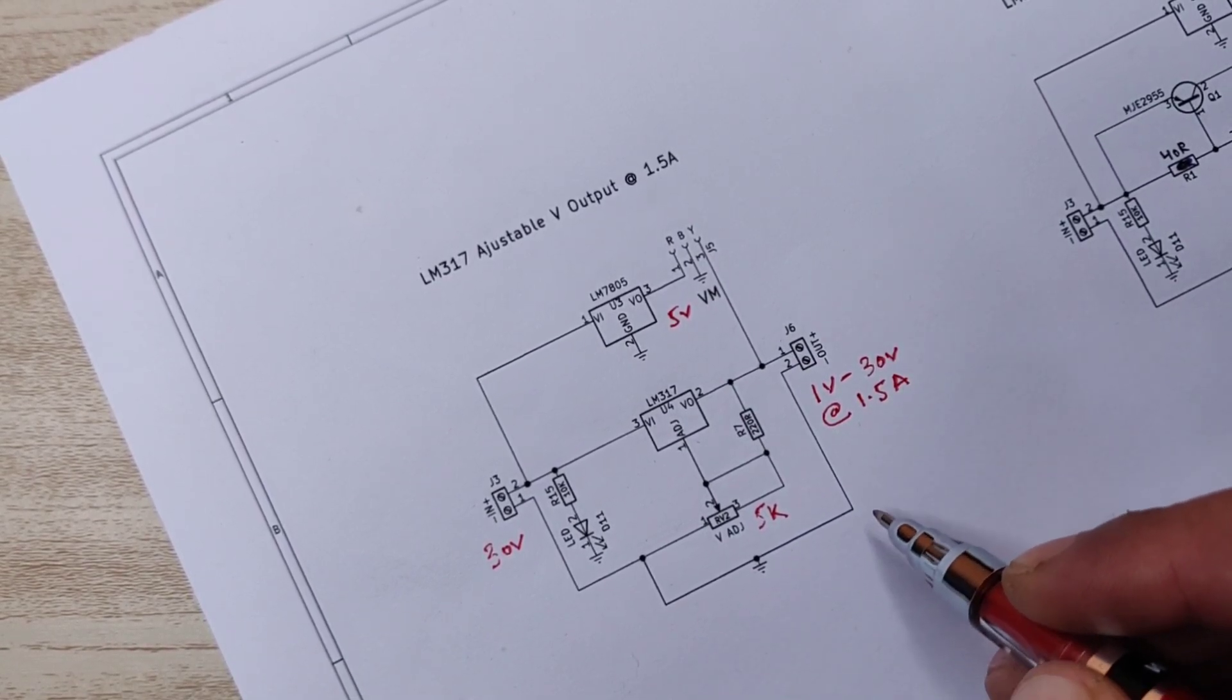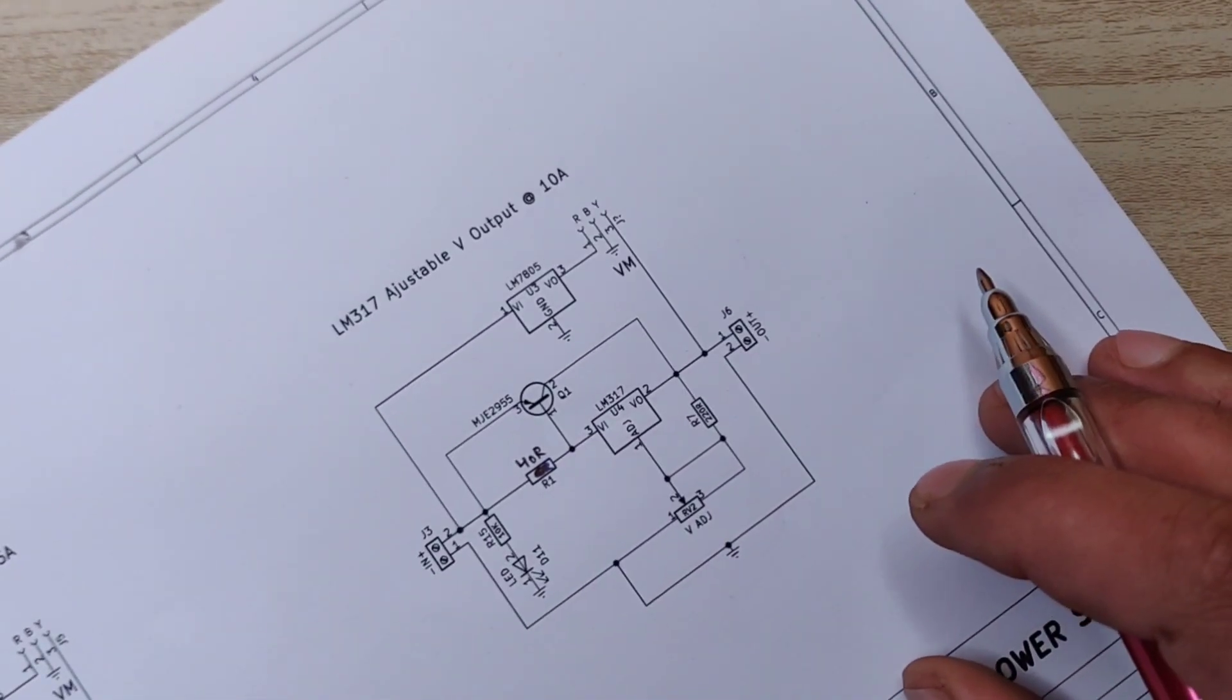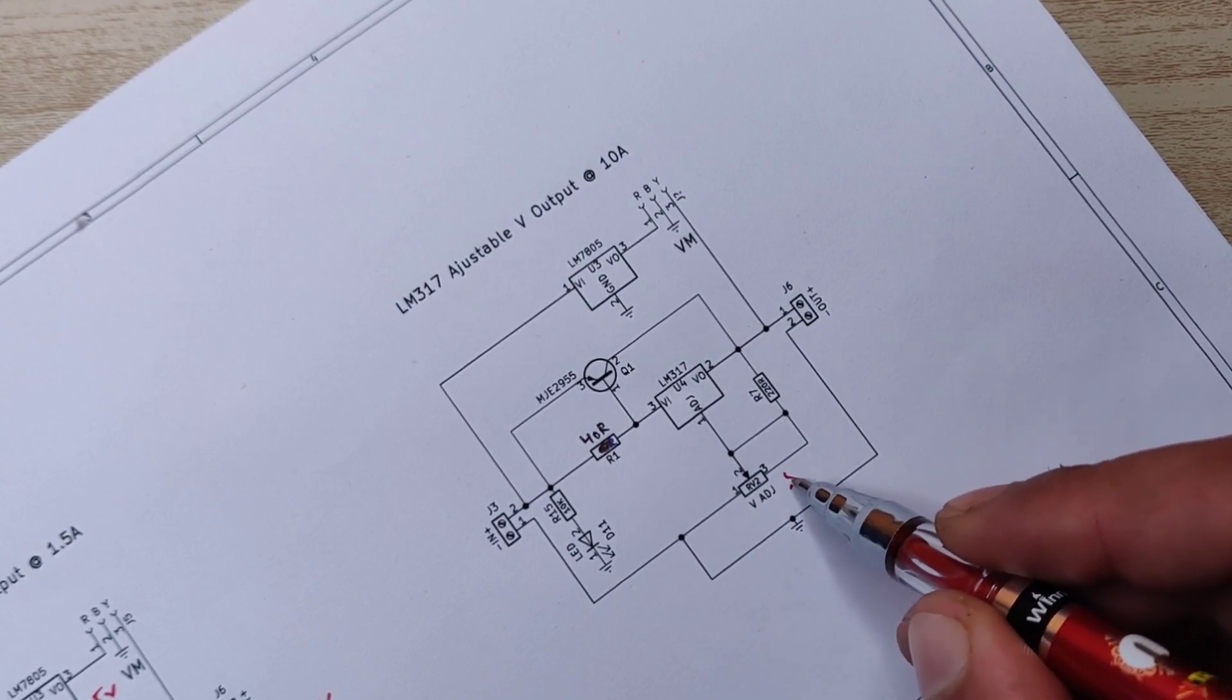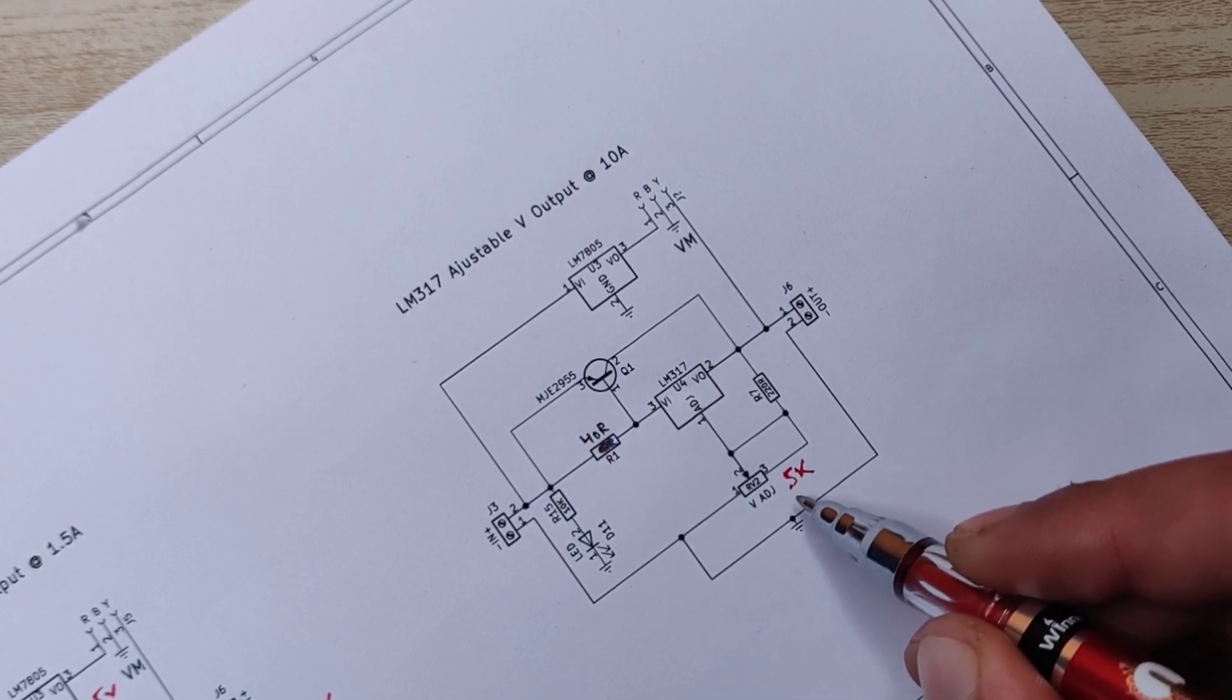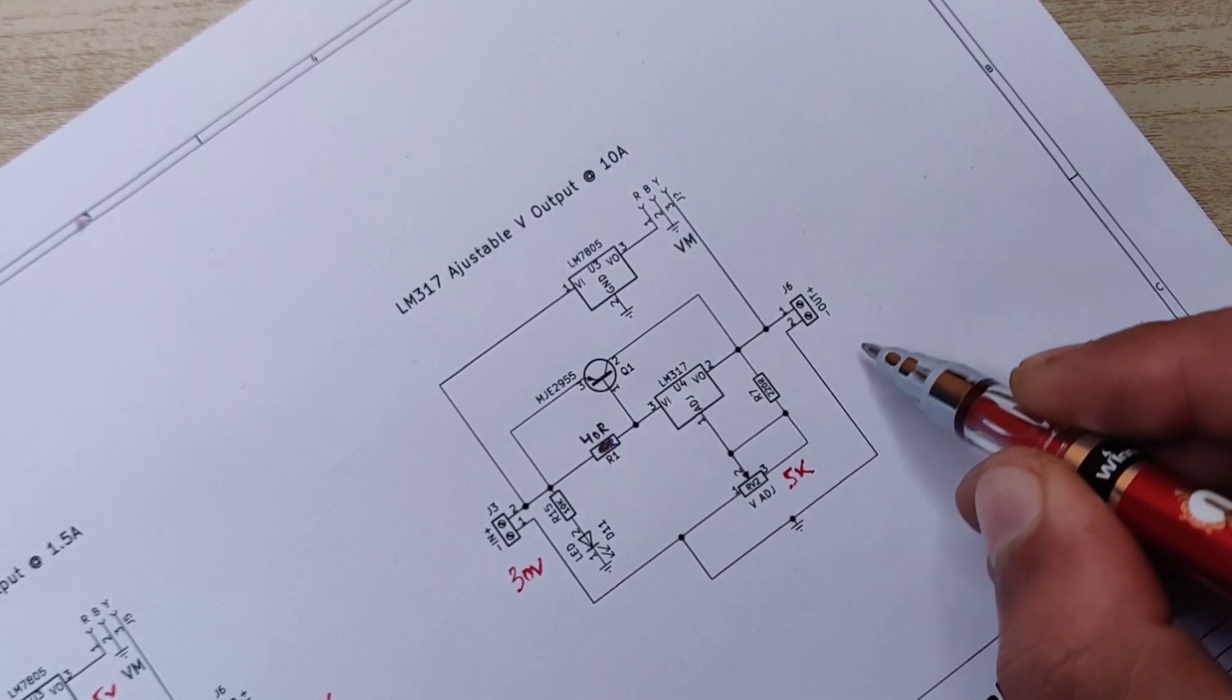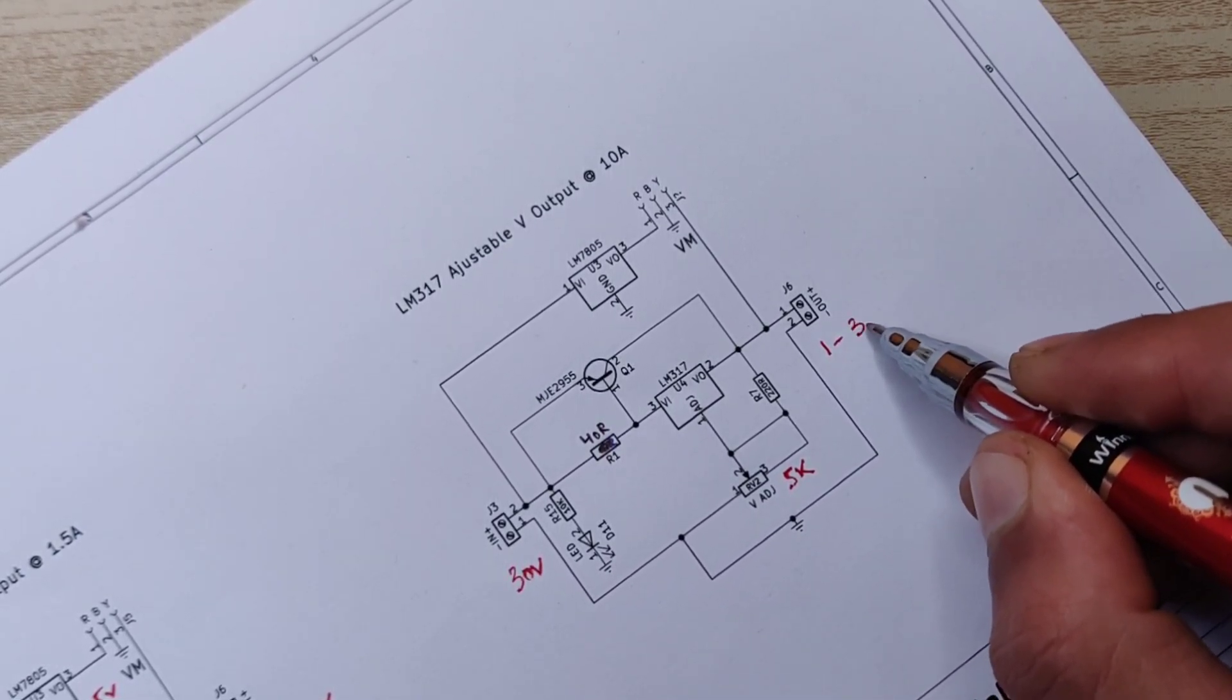Now if we look at the other diagram, you can see similar to the first diagram we have LM317 adjustable regulator with 5 kilohm potentiometer, same 30 volt input and 1 to 30 volts adjustable output but with 10 ampere.